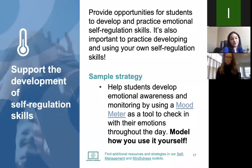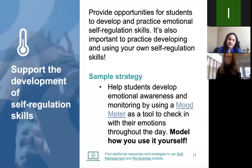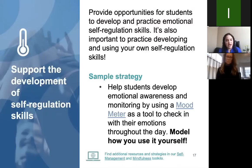We also talk about providing opportunities for students to develop and practice social-emotional self-regulation skills — and a critical part of this is practicing your own self-regulation skills. You might have heard of the RULER approach and the mood meter as a tool to check in with emotions throughout the day. Model how to use it yourself: you might start the day by saying you're feeling a little uneasy, naming that emotion and showing students that you are also finding ways to identify emotions and check in with yourself throughout the day. That modeling piece is really, really key.